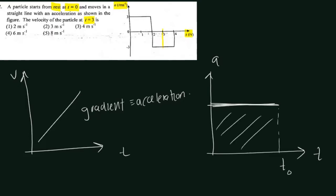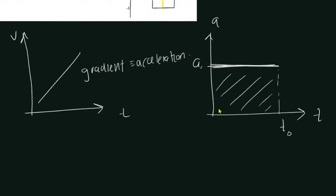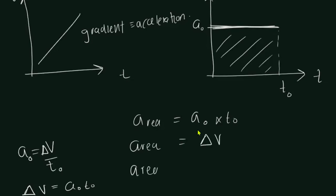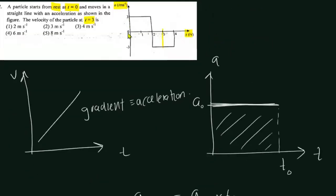From the area of an AT graph: if acceleration is constant at A-naught for time T-naught, then the area is A-naught times T-naught. Also, acceleration equals change in velocity divided by time taken, so A-naught times T-naught equals delta-v. Therefore, the area of an AT graph gives us the change in velocity — not the velocity itself, but how much it changed.